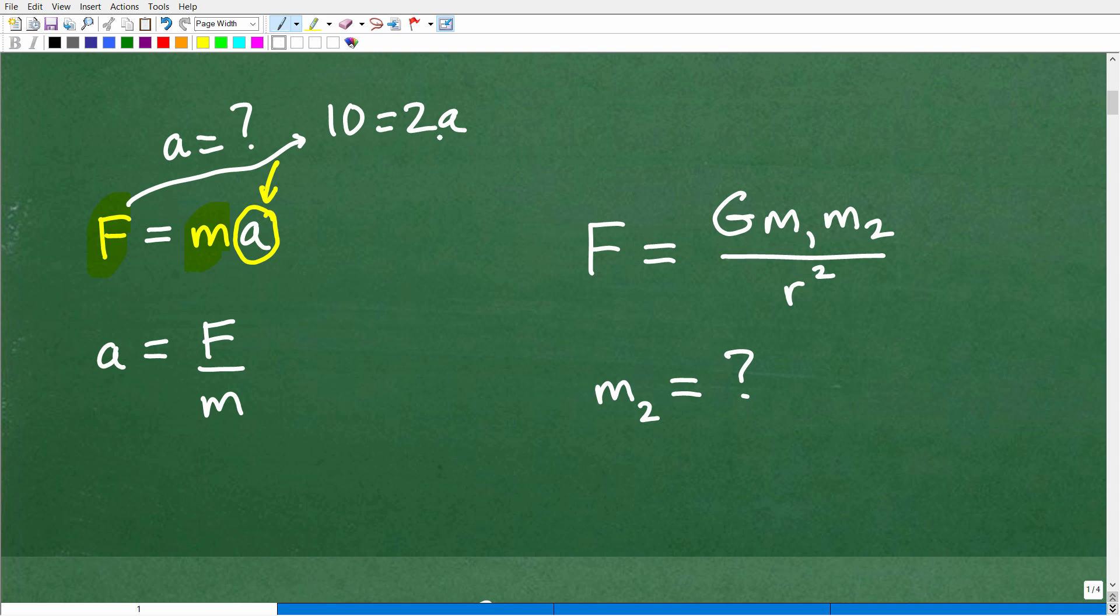So what do we do here? Well, you can remember your basic algebra to solve for a. I just need to divide both sides of the equation by 2. So 10 divided by 2, that's what a is equal to. And you can see here, instead of 10 and 2, I have F and m.